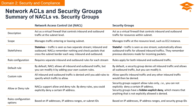NACLs require separate inbound and outbound rules for each stream. Security groups, however, have rules that apply to both inbound and outbound traffic simultaneously. By default, NACLs allow all inbound and outbound traffic, but this can be modified by adding custom rules. Security groups by default deny all inbound traffic and allow all outbound traffic, with the ability to be customized. For NACLs, all inbound and outbound traffic is denied until specific rules are added to allow certain traffic. In security groups, you specify rules to allow specific inbound traffic, and any other inbound traffic is automatically denied.